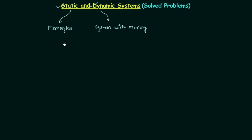Now we will try to understand why we call static systems memoryless systems and why we call dynamic systems systems with memory. Static systems are those in which the output is only dependent on the present input. Since we are only using the present input, there is no need to store previous or future values, so no memory element is needed — that's why the system is known as a memoryless system.